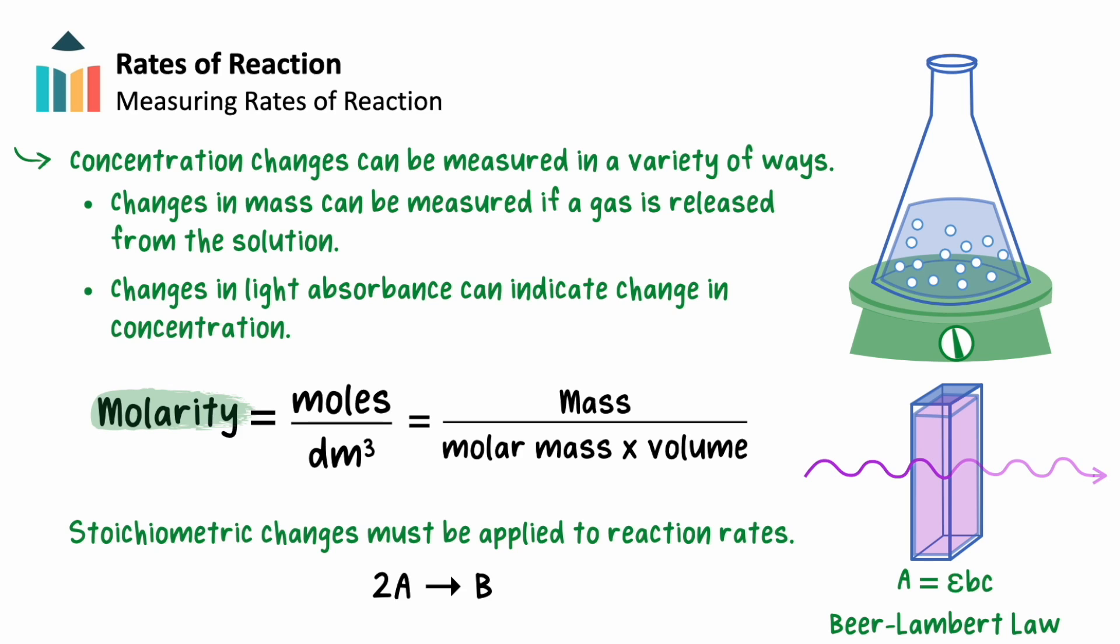We will also need to think about stoichiometry. For example, if the reaction equation is 2A goes to B, then 2 moles of A will be used for every mole of B produced, so the rate of reaction of A is typically 2 times the rate of production of B.